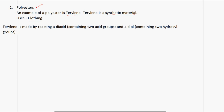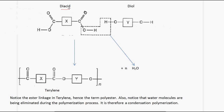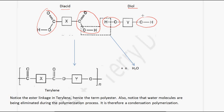Terylene is made by reacting a diacid with a diol. A diacid contains two acid groups, and a diol contains two hydroxyl groups. The OH from the acid and the H from the diol form water, so water is eliminated. The type of bond we get this time is the ester linkage.